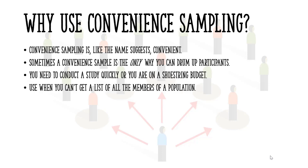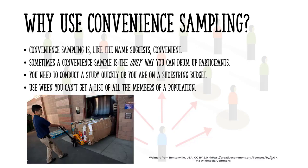It's also one of the only methods you can use when you can't get a list of all the members of a population. For example, let's say you were conducting a survey for a company who wanted to know what Walmart employees think of their wages. You probably won't be able to get a list of employees — you might have to resort to standing outside the store and grabbing whoever comes out.